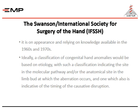The Swanson International Society for Hand Surgery classification appeared relying on knowledge available in the 1960s and 70s. Ideally, a classification of congenital hand anomalies would be based on etiology, indicating the site in the molecular pathway and the anatomical site in the limb at which the aberration occurs, and also indicative of the timing of the causative disruption.